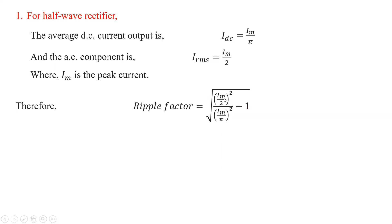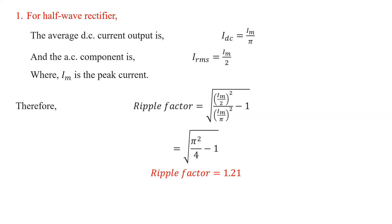Substituting I_rms = I_m / 2 and I_dc = I_m / π into the ripple factor formula: I_m² cancels out, and we get γ = √(π² / 4 − 1). Calculating this gives a ripple factor of 1.21. So the AC component is 121% — meaning the AC component is 1.21 times the DC component.